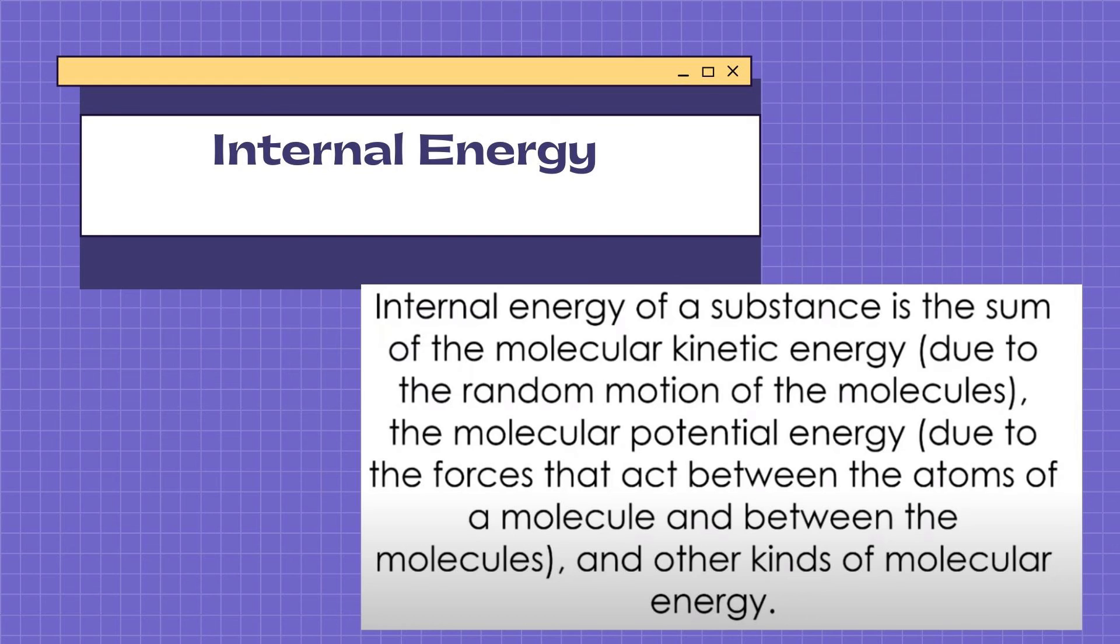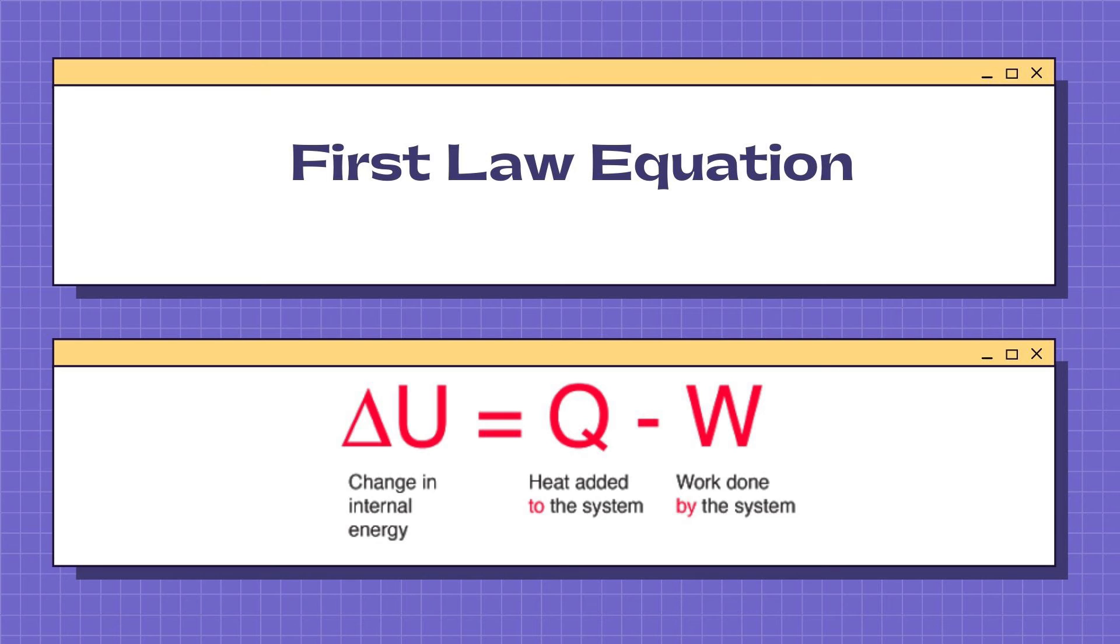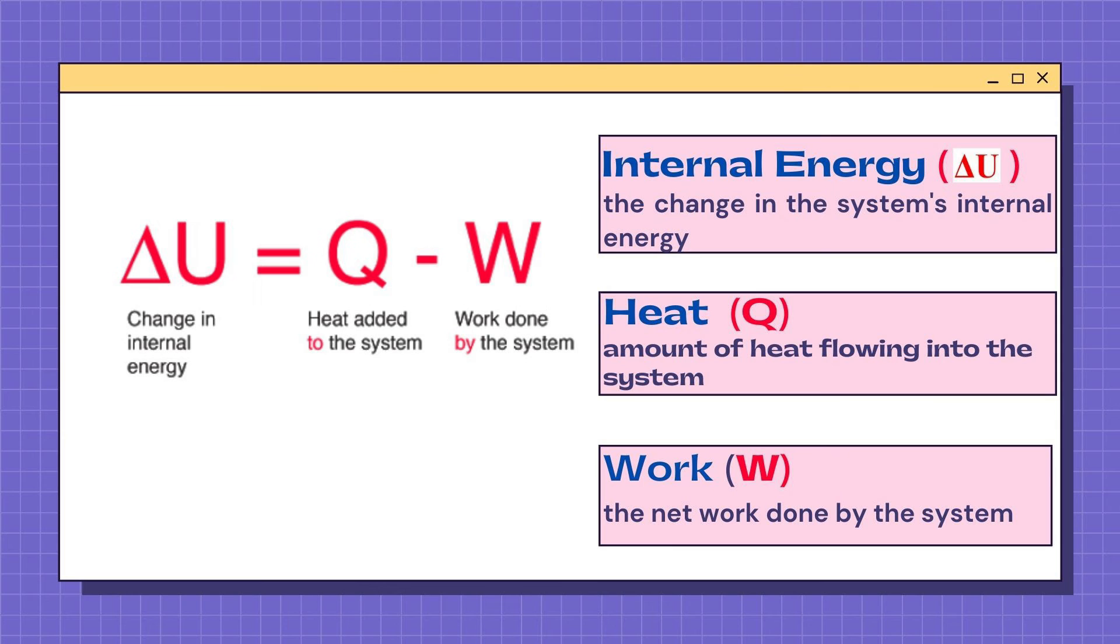Now let's talk about the first law equation: ΔU = Q - W. Delta U refers to the change in internal energy. Heat is represented by Q. It refers to the amount of heat flowing into the system.